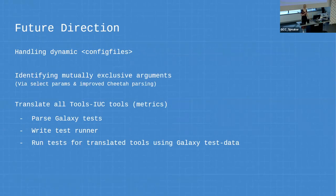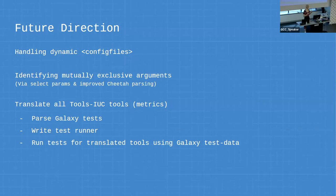In future, we'd like to do more handling of dynamic config files — they also use Cheetah templating, so a better solution for that. I'd also like to identify mutually exclusive arguments, looking more at the select params in Galaxy, and improved data parsing in general. We'd also like to parse all of the Galaxy tools, their tests, do the translation, build a test suite, and run those tests to make sure the translated tools are valid. That gives us metrics — we can tell you how often tools are runnable: 80%, 50%, 90%.